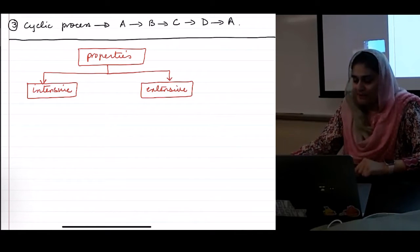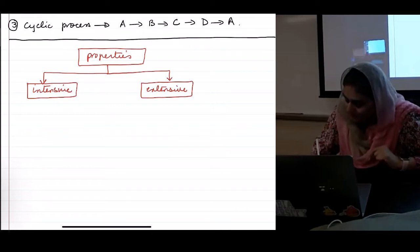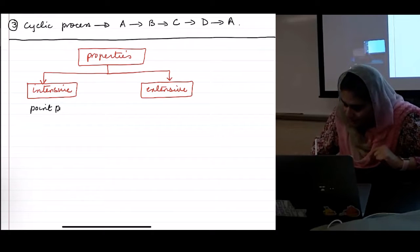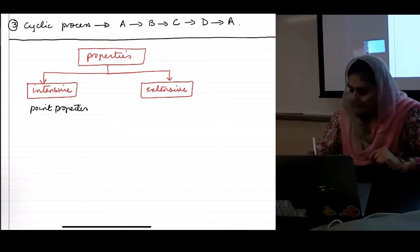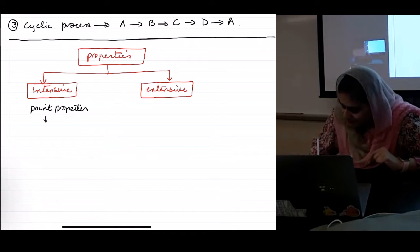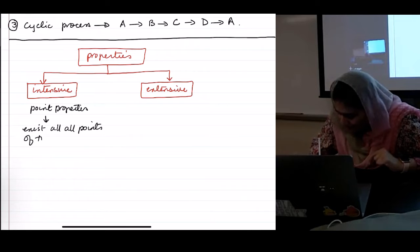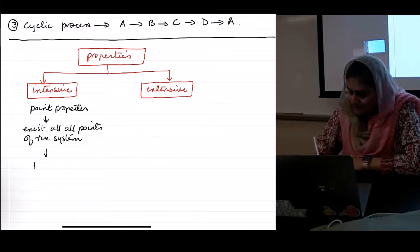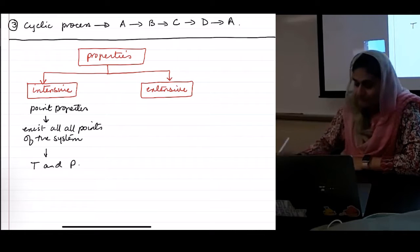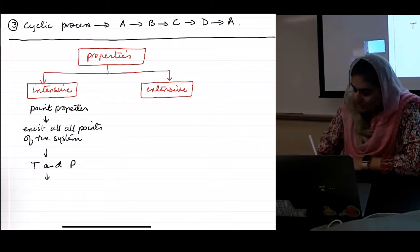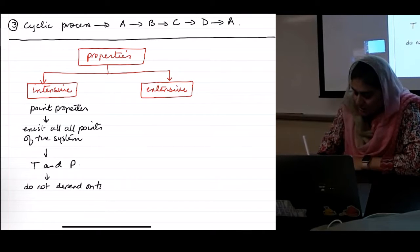Intensive properties are also called point properties. They exist at all points of the system. And these are properties like temperature and pressure. They also do not depend on the mass of the system.